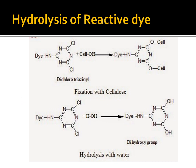Let us see the mechanism of hydrolysis. Taking dichlorotriazinyl based dye as an example: it gets reacted with cellulose, and the representative reaction shows how the dye attaches to the OH group — elimination of H — and gets attached to the oxygen of cellulose, fixing it on the cellulose substrate. In the second reaction, we can find how hydrolysis of reactive dye occurs. The dye reacts with water and a dihydroxy group gets formed in the dye. This hydrolyzed dye bleeds during washing and causes staining of the unprinted ground.